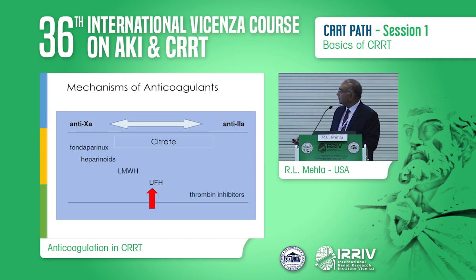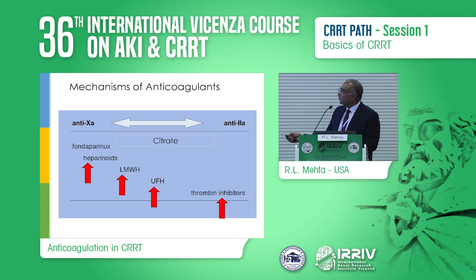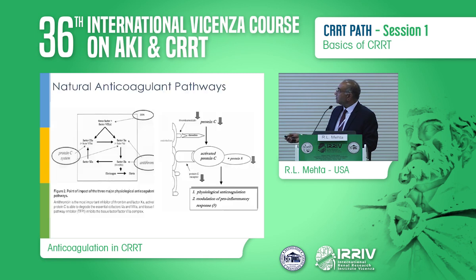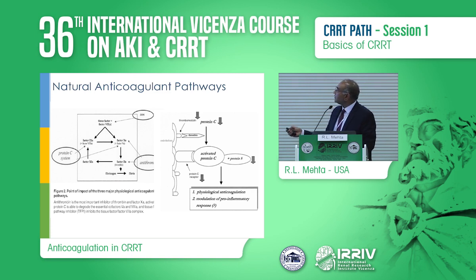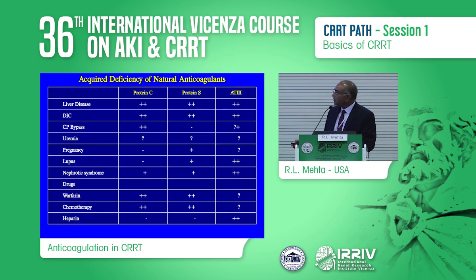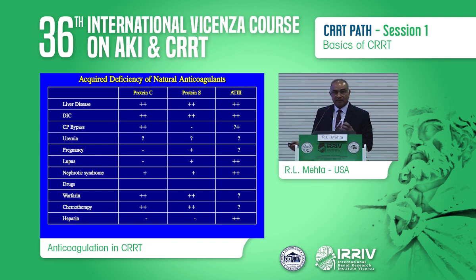When you look at this in context: unfractionated heparin is in the center. As you go towards the anti-Xa pathway, you've got low-molecular-weight heparin, heparinoids, and fondaparinux. Then you've got the thrombin inhibitors on the other end, whereas citrate works across the board. Regarding natural anticoagulant pathways, protein C, activated protein C, and protein S are the physiological anticoagulants which are present. It's important to recognize that there are acquired deficiencies of natural anticoagulants, particularly in patients with nephrotic syndrome or protein-losing enteropathies.